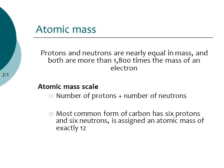In addition to atomic number, elements also have atomic mass. Atomic mass is the number of protons plus the number of neutrons. We use this because protons and neutrons have about the same mass — and they're about 1,800 times bigger than electrons. So electrons we say have a mass of zero and we ignore them. Atomic mass is simply the number of protons plus the number of neutrons.